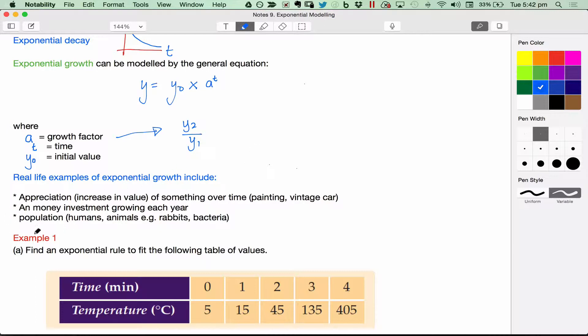And population growth, human population growth, animals, rabbits, kangaroos, whatever. And also bacteria, small things that break up into two and double and quadruple after each time point.